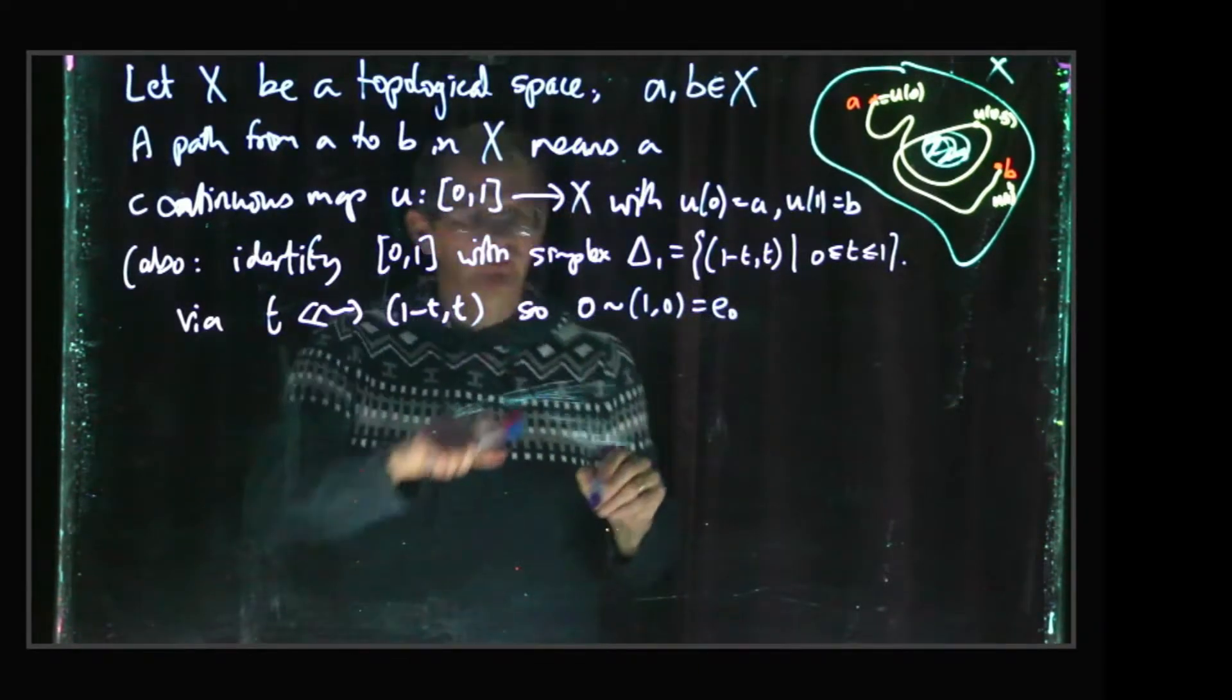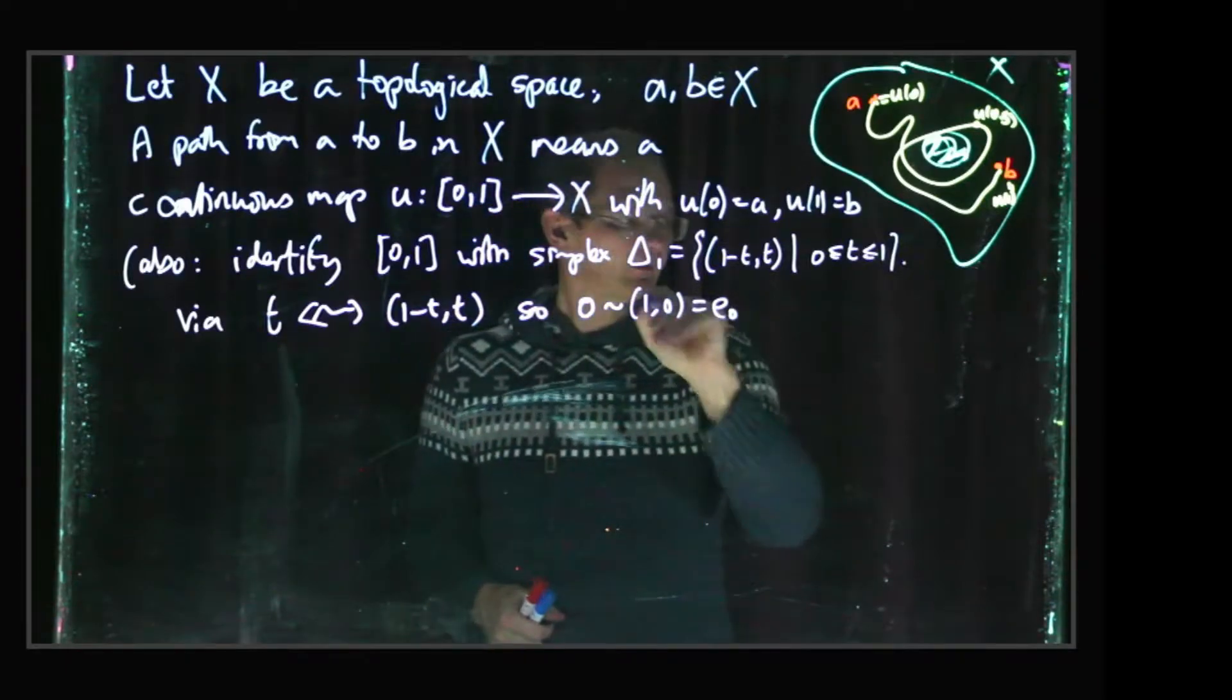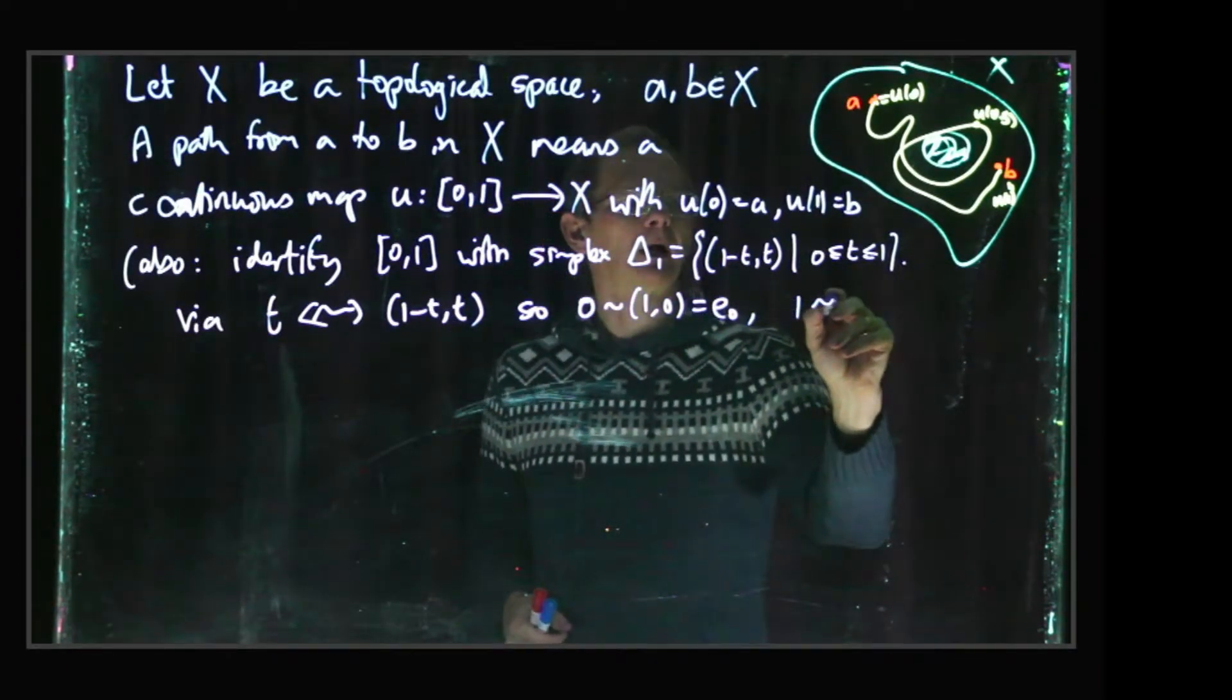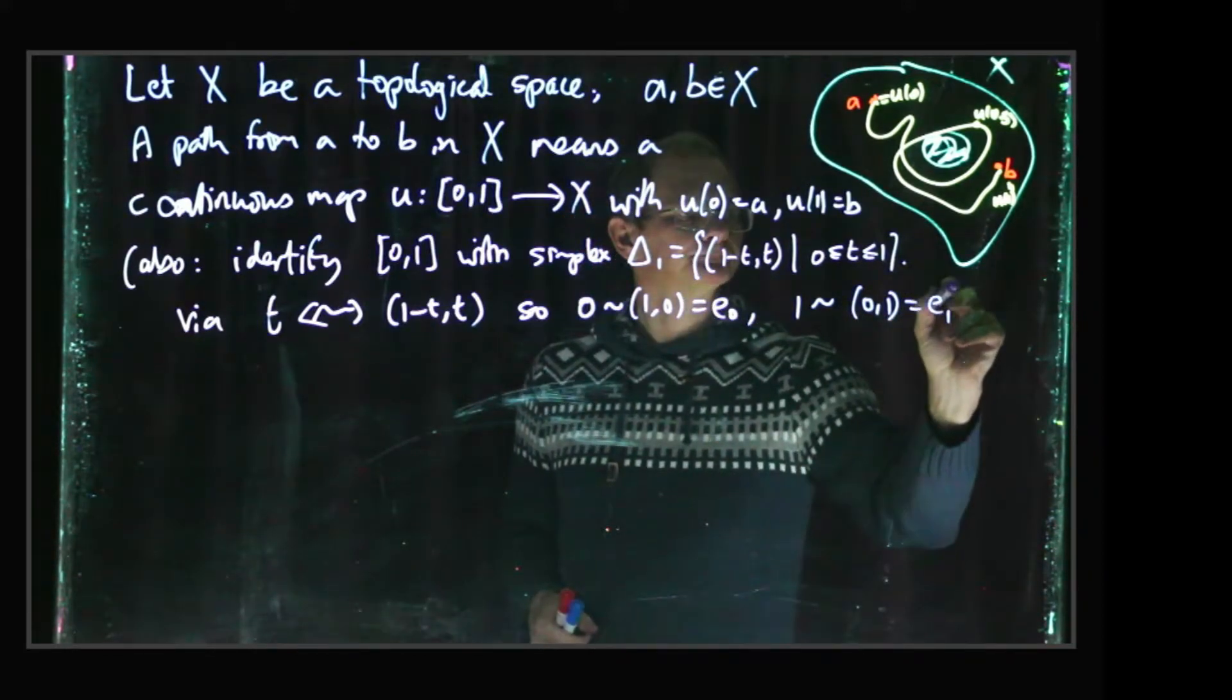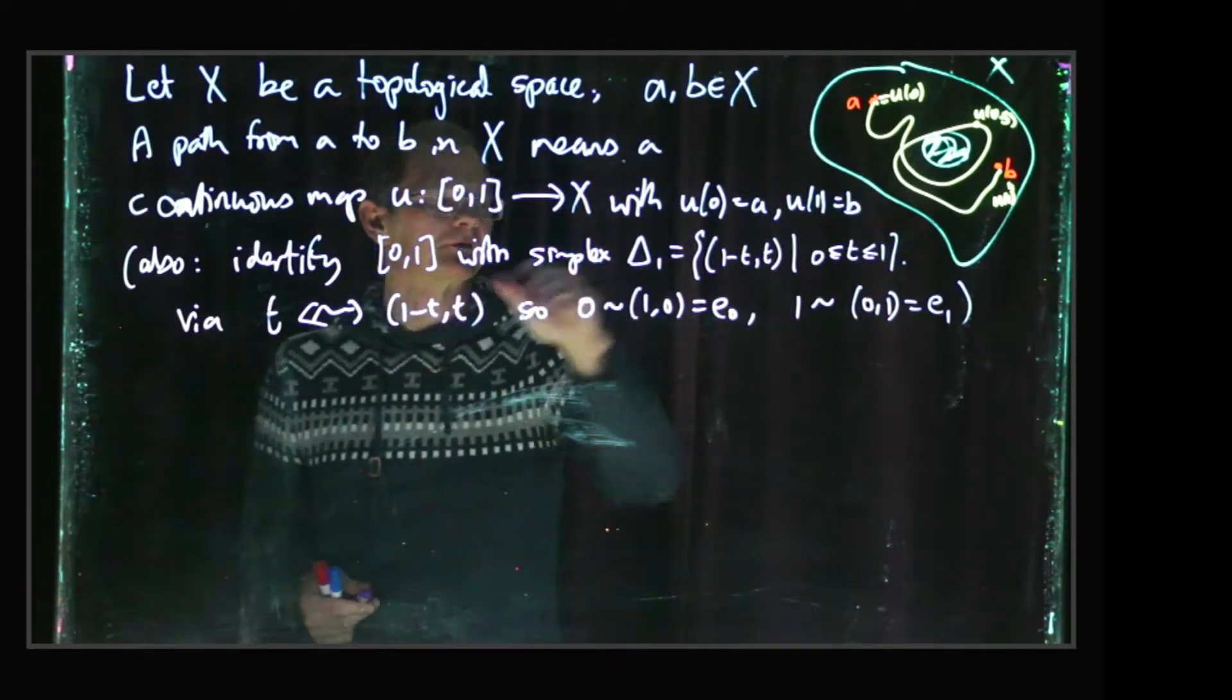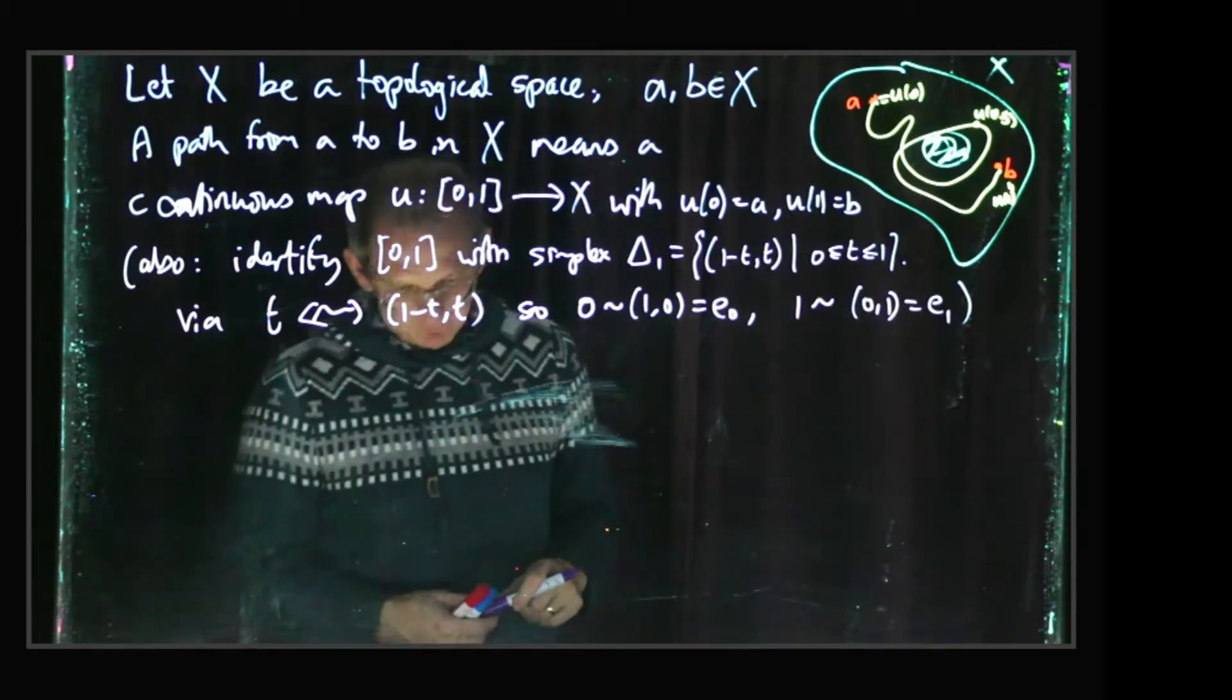So that means that the 0 end becomes this pair (1, 0), which we call e0, and 1 becomes (0, 1), which we call e1. So sometimes it's going to be more convenient to think in terms of the one simplex, but sometimes just in terms of the unit interval. So that's what we mean by a path.